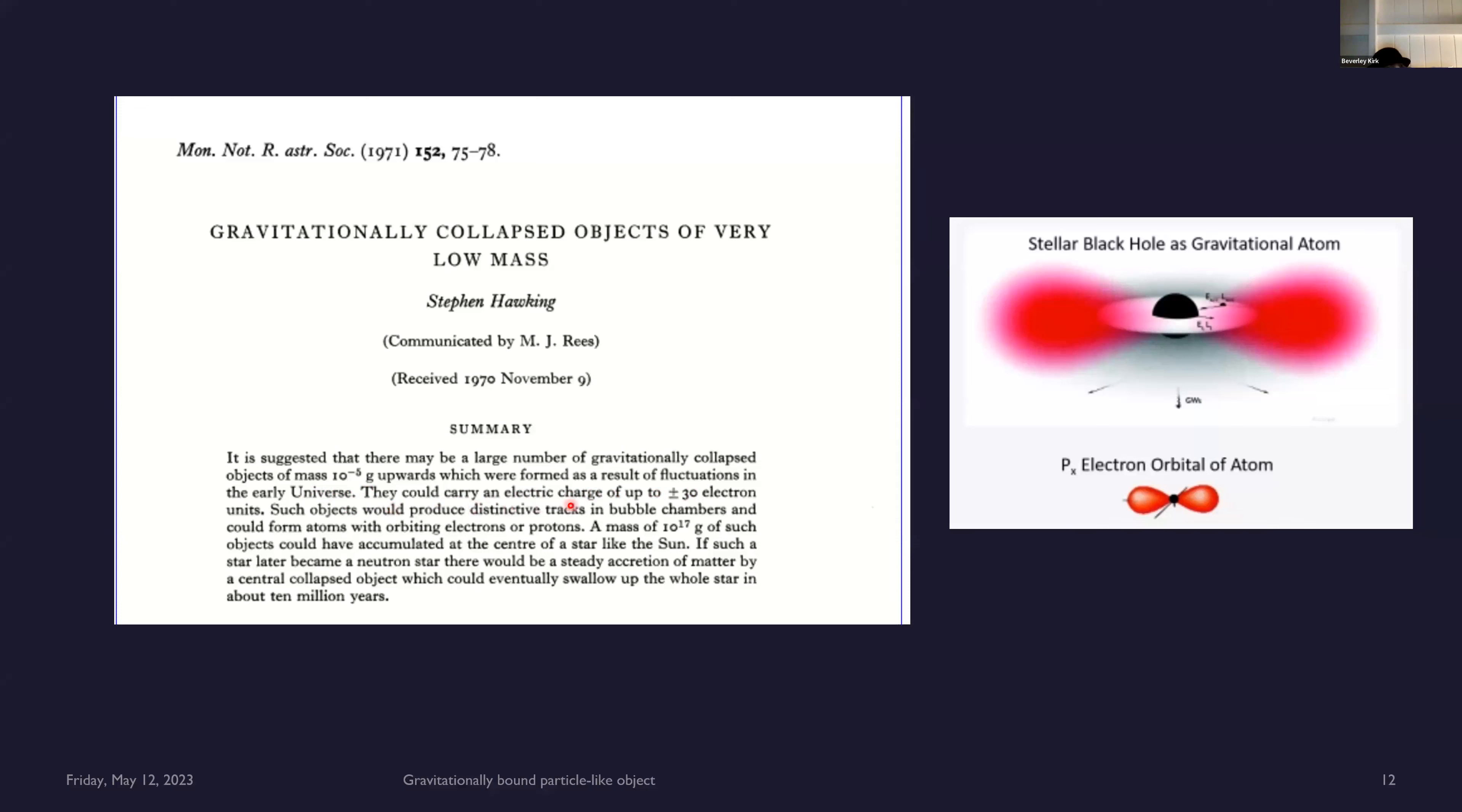They would carry an electric charge of up to plus or minus 30 electron units. Such objects would produce distinctive tracks in bubble chambers and could form atoms with orbiting electrons or protons.